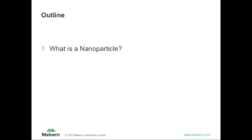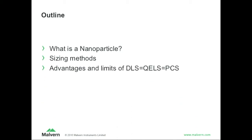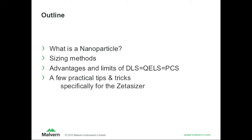So quickly: what is a nanoparticle? I think maybe everybody is familiar with that, but I just wanted to mention it again. What can you do to size nanoparticles? And then the core will be dynamic light scattering, which is also known as photon correlation spectroscopy or quasi-elastic light scattering. I'll assume many of you are using light scattering in some form and I wanted to add some practical tips on what you can do with it.